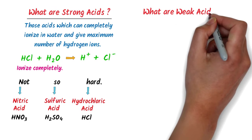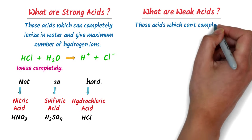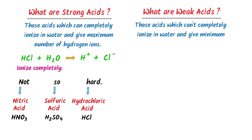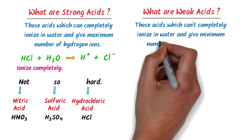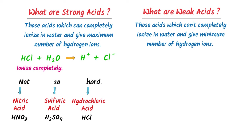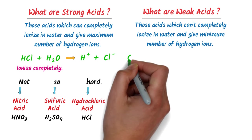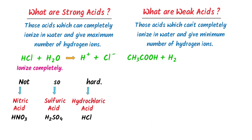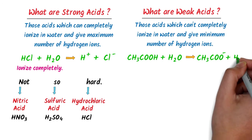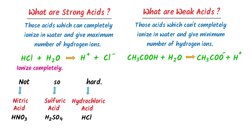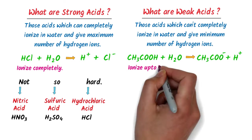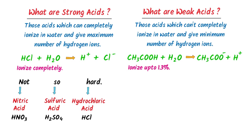Now what about weak acids? Those acids which cannot completely dissociate or ionize in water and give a lower number of hydrogen ions are called weak acids. For example, consider acetic acid. When we dissolve acetic acid in water, it partially dissociates — it can only ionize up to 1.3%. So it doesn't ionize completely in water, that's why we call it a weak acid.